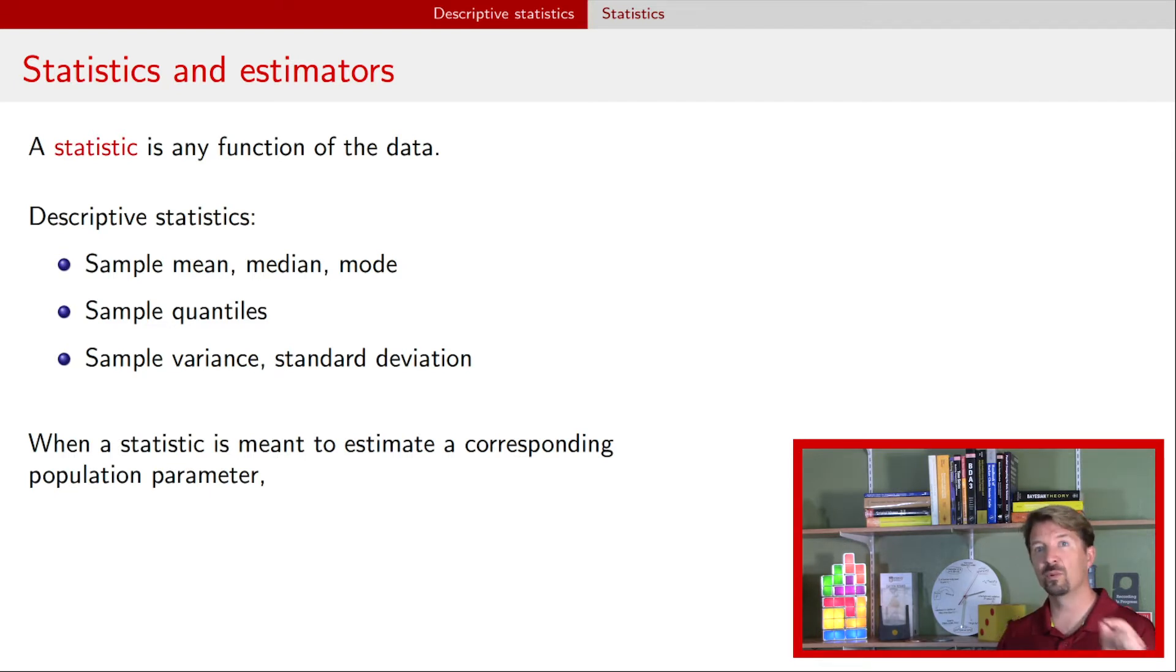Now, we talked in the previous video about a desire to make inferential statements about a population. And so when we have a statistic that's trying to make a statement about a population parameter, then that statistic will often refer to as an estimator, because it is estimating that population parameter. And so we're going to go today and look at a few different examples of estimators, what the population parameter is, what the statistic is that provides us the estimate of that population parameter. We call that an estimator.